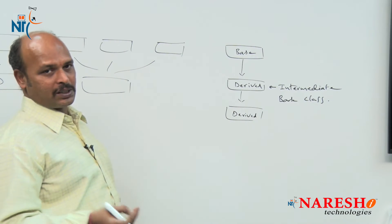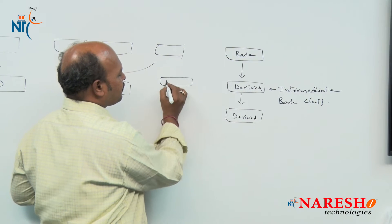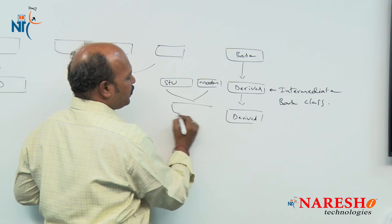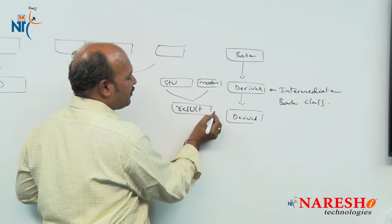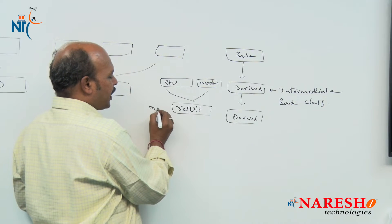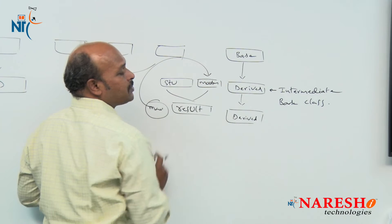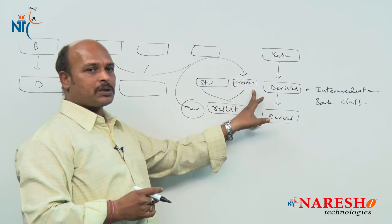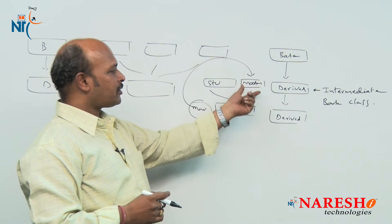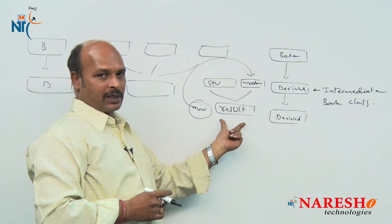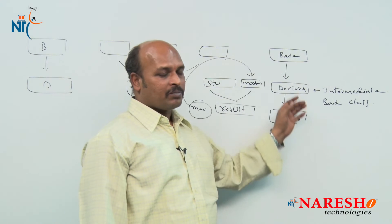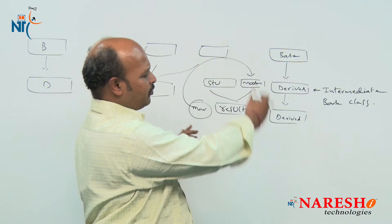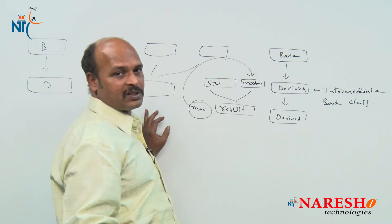Yesterday we discussed the concept using a student class and a marks class, and from these two classes we find the result. The marks class subjects need to be protected members so they can be used in the result class. Multi-level inheritance means deriving a new class from another derived class, and we can derive any number of levels this way.